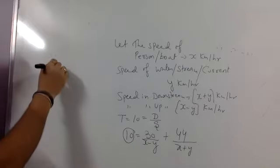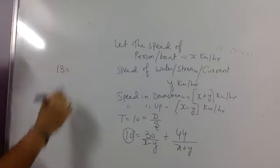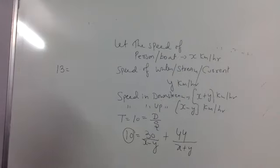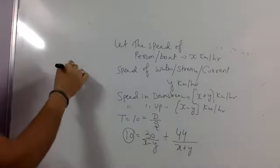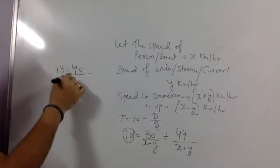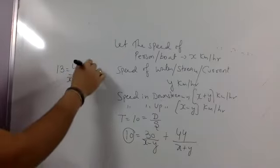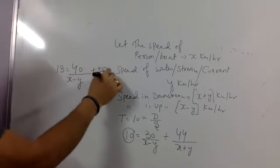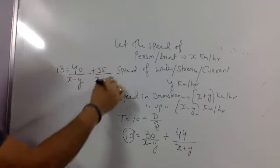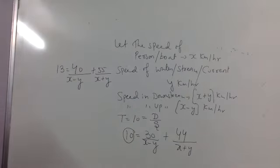Now aap ka dusre mein total time kitna hai? 13 hours. Now aap upstream kitna jaoge? 40 km. And downstream kitna jaoge? 55 km. Yes sir. Ban gaya do equation?